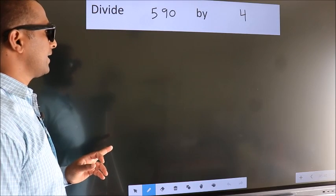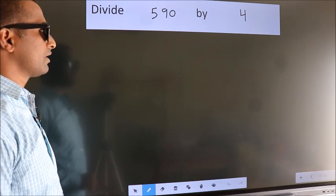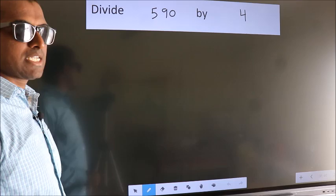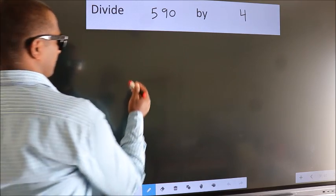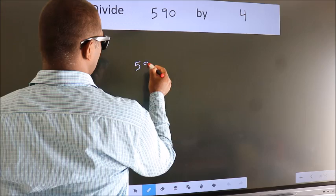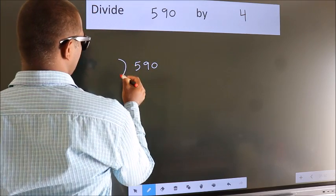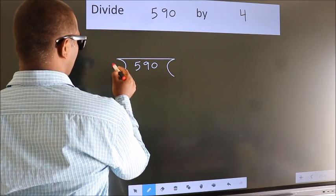Divide 590 by 4. To do this division, we should frame it in this way. 590 here, 4 here.